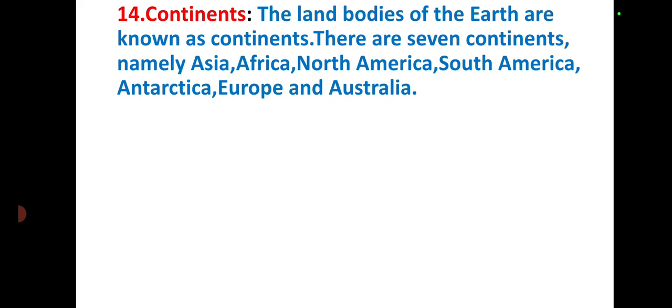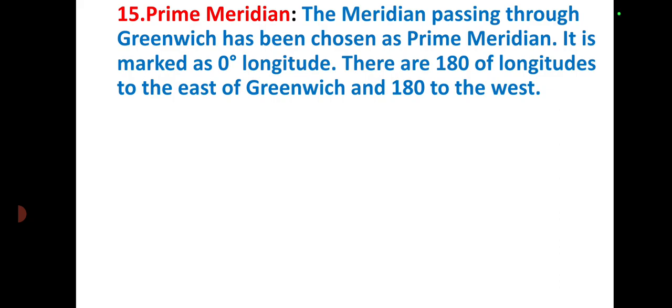The continents. The land bodies of the Earth are known as continents. There are seven continents: Asia, Africa, North America, South America, Antarctica, Europe, and Australia. Prime Meridian. The meridian passing through Greenwich has been chosen as the Prime Meridian. It is marked as zero longitude. There are 180 longitudes to the east of Greenwich and 180 to the west.